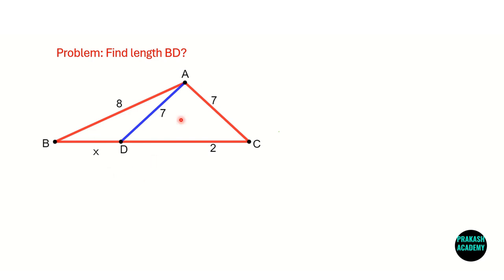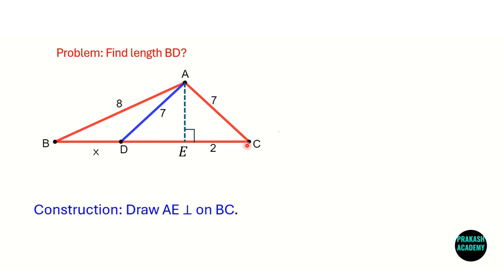Let us first do a construction. From point A, draw a perpendicular line on base BC, so AE is perpendicular to BC.